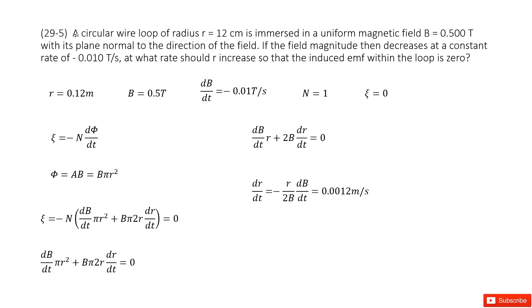Let's see what the given quantities are. The problem tells us there's a loop, so that means n equals 1. The radius is given. The magnetic field is given. It also tells us the magnetic field decreases at a constant rate. So you can write dB/dt as negative 0.01 T/s.